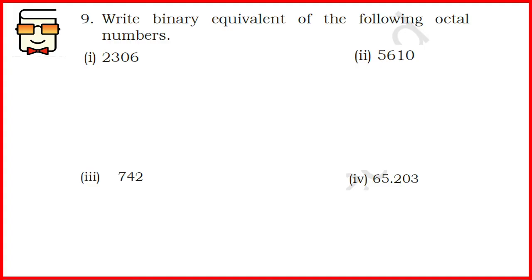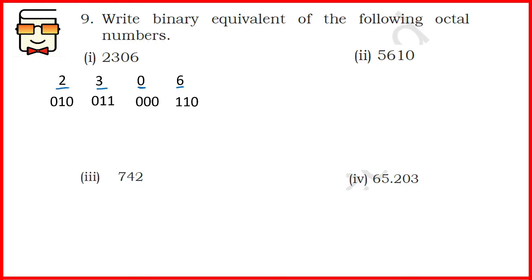Question 9 asks you to write the binary equivalent of the following octal numbers. For each digit in the octal number, write the three-digit binary representation. Since it is octal, 2 raised to the power 3 is 8, which is why we write groups of 3. For the first part, 2306: for each digit write a group of 3 binary digits equivalent to the corresponding octal digit, then write all groups together for the final answer.